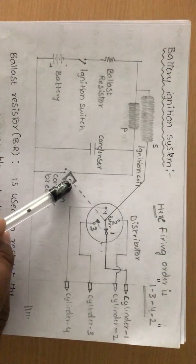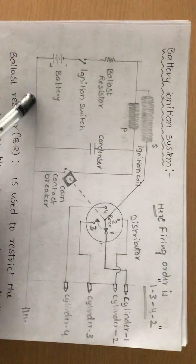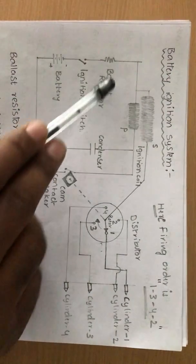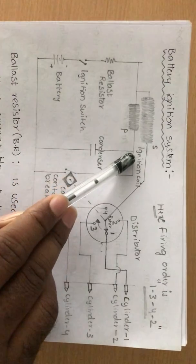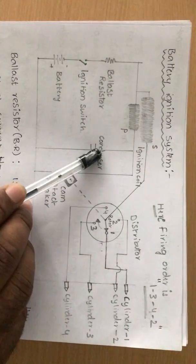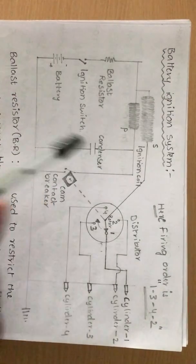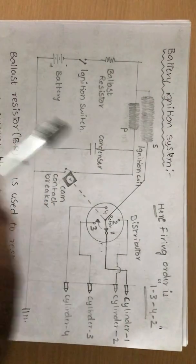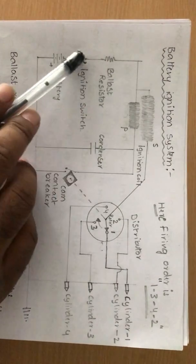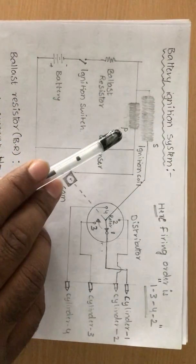Because of the cam movement, if the contact breaker is open, the current flow is stopped because the circuit is open. The current then enters the condenser — the condenser begins charging. As the condenser is getting charged, the amount of current entering into the primary coil is reduced.